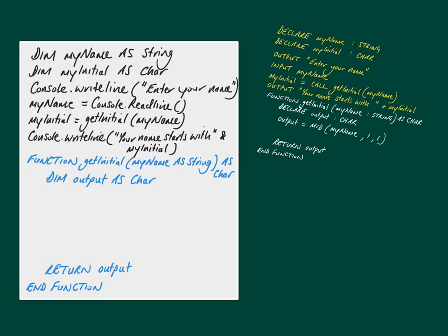We've got one more line to go: 'output equals Mid(my name, 1, 1)', which takes the first letter of any word or name that's been passed into the function 'get initial' and assigns it to the variable 'output'.